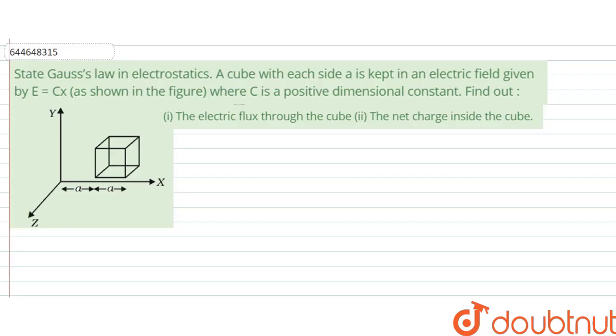Hello, we are giving you the question and the question says, state Gauss's law in electrostatics. A cube with each side A is kept in an electric field given by E equals Cx, where C is a positive dimensional constant. Find out the electric flux through the cube and the net charge inside the cube.